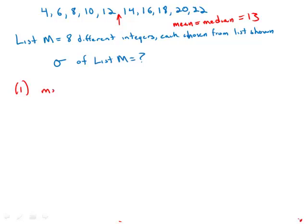And so what this tells us is that the mean of list M is 13. So we know that we'd have to take eight numbers that are symmetrically spaced around the middle. But we have a variety of numbers that we could take, and they'd have different standard deviations. So this by itself does not allow us to calculate the standard deviation. This by itself is insufficient.